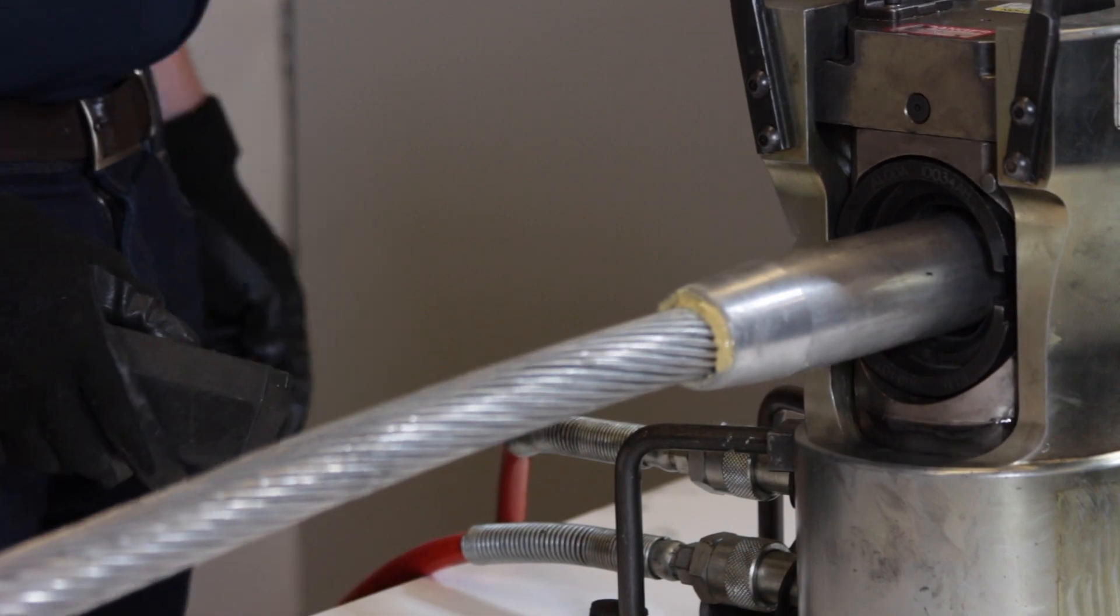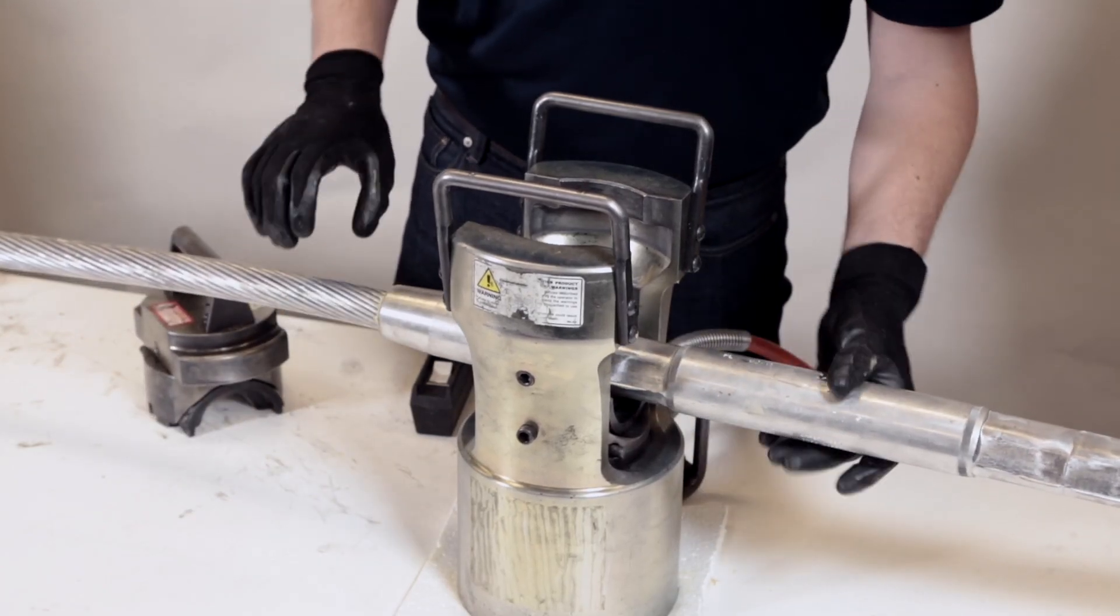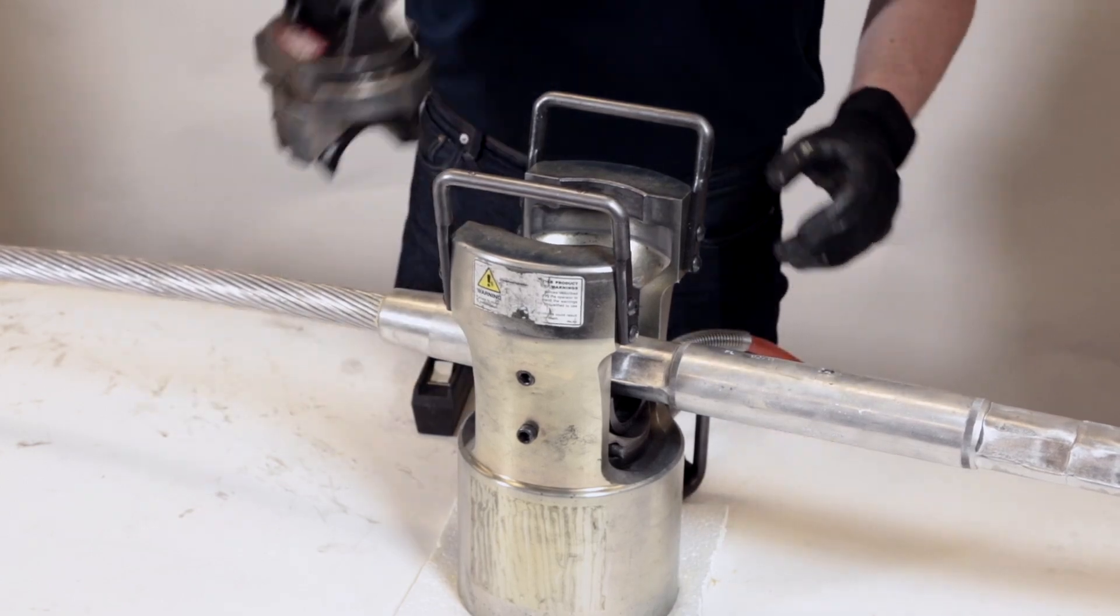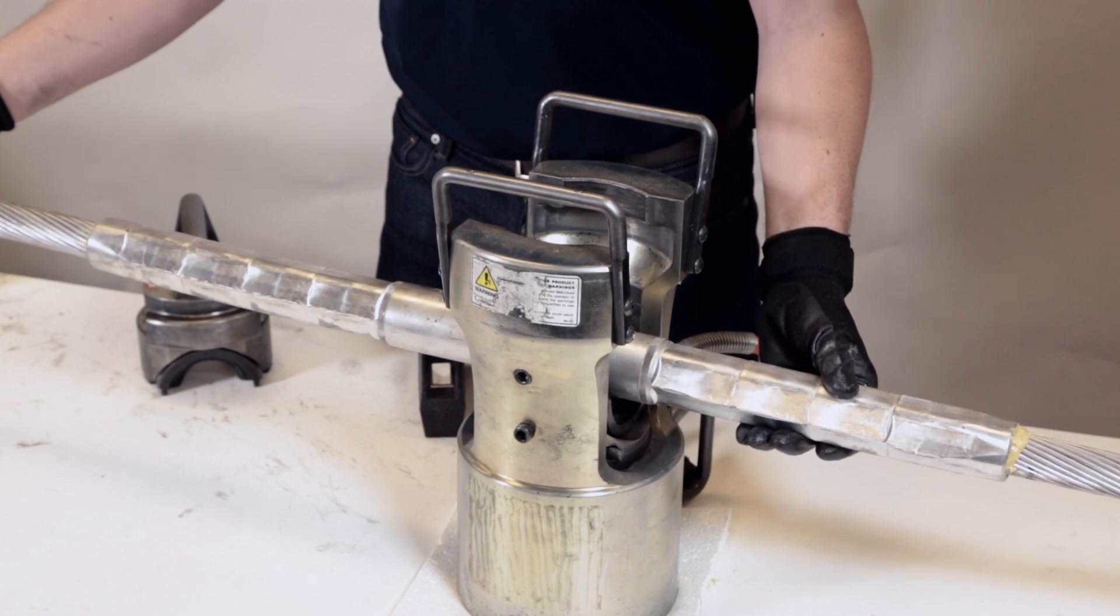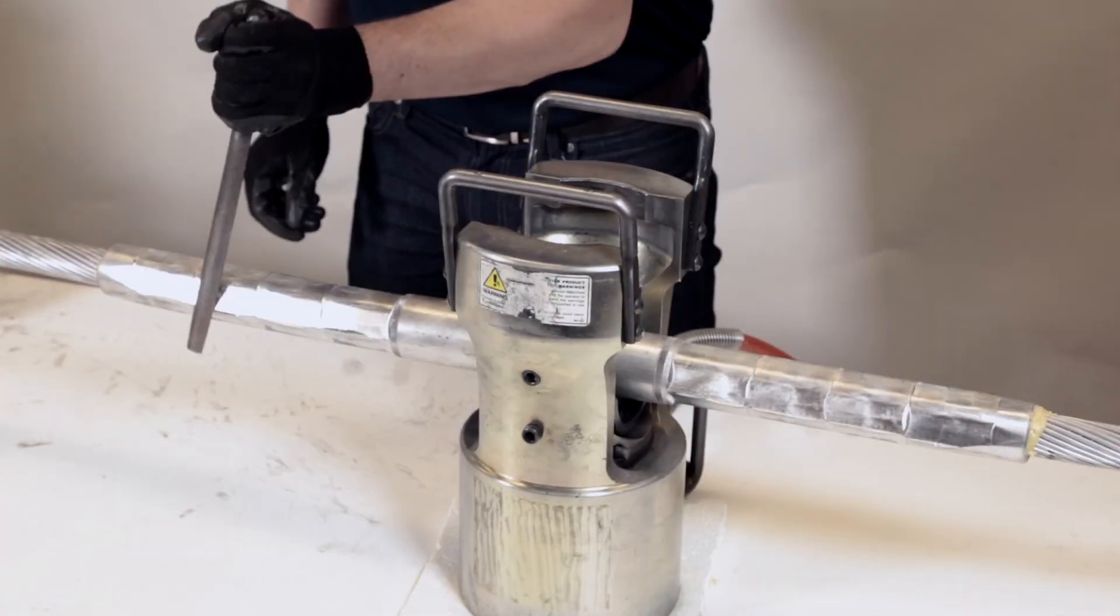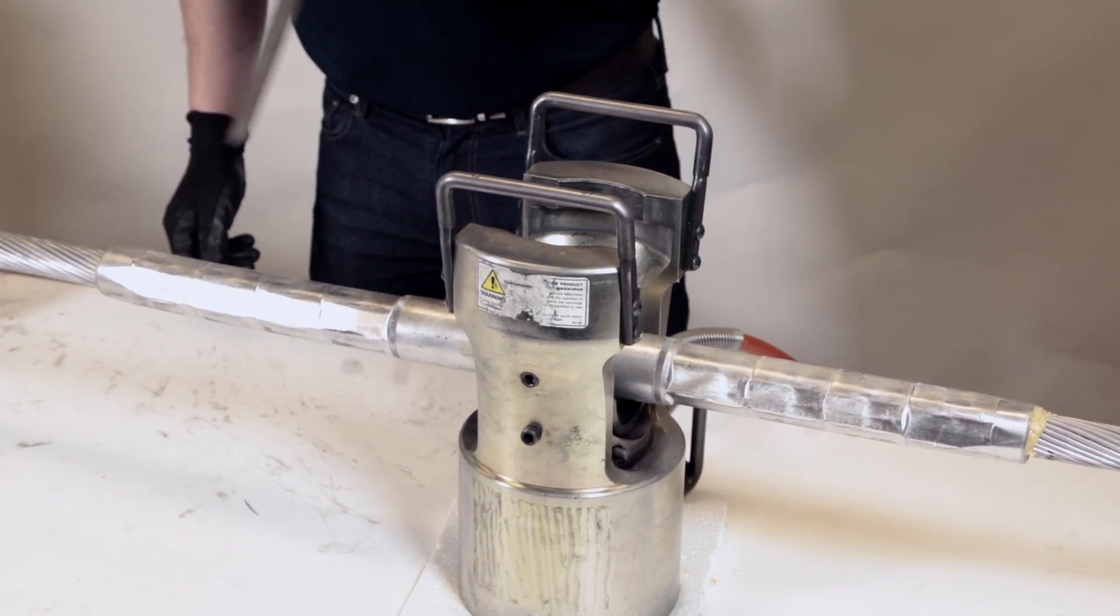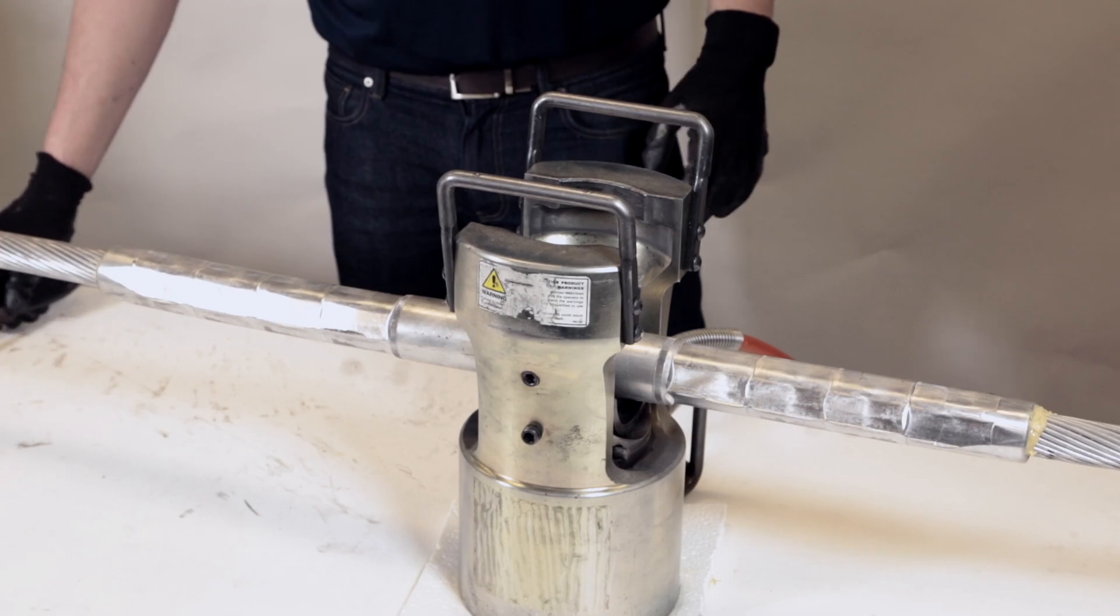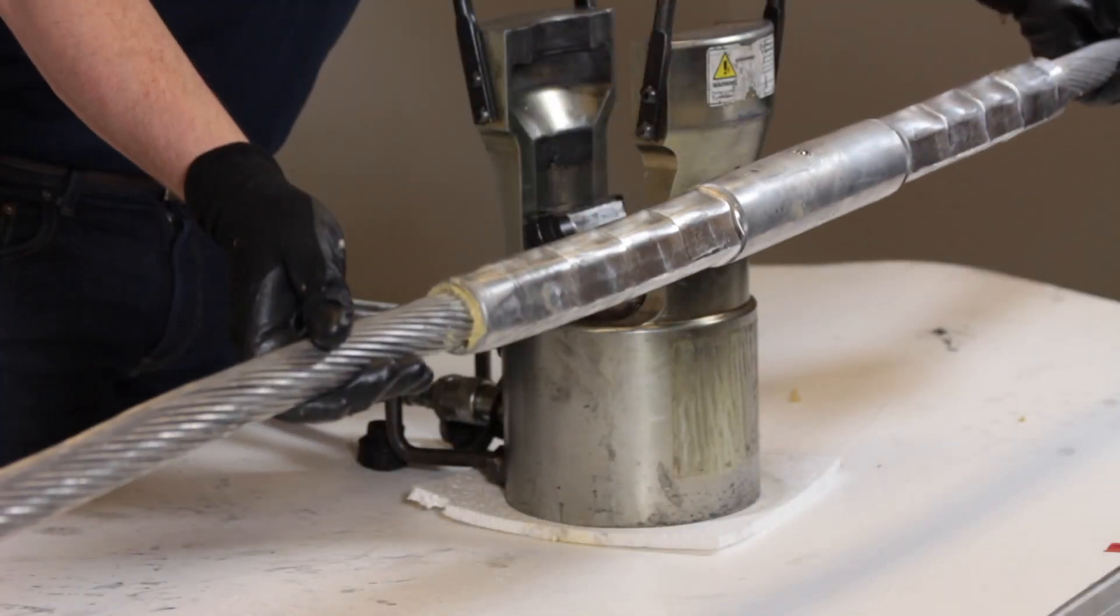Repeat this step for the other side of the splice tube, leaving the center section between the nurls uncompressed. Clean off any excess tape or inhibitor. Any flash left on the aluminum tube after compression should be removed with pliers and sharp edges should be filed to a smooth finish. Once compressed and cleaned, the splice application is complete.